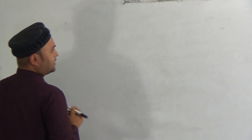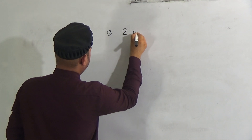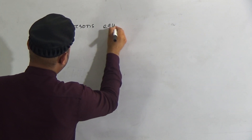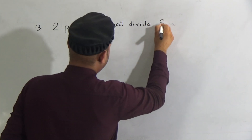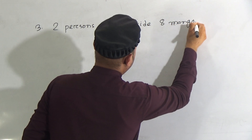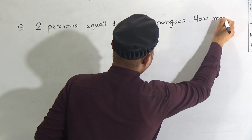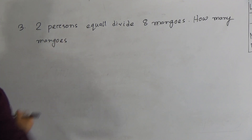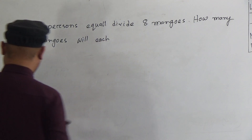Now, my dear students, open your book and go to page 72, question number 3. Look at the question: there are two persons who equally divide 8 mangoes. How many mangoes will each person get?